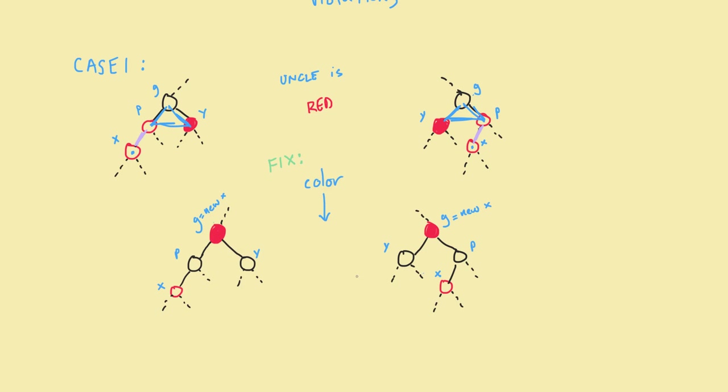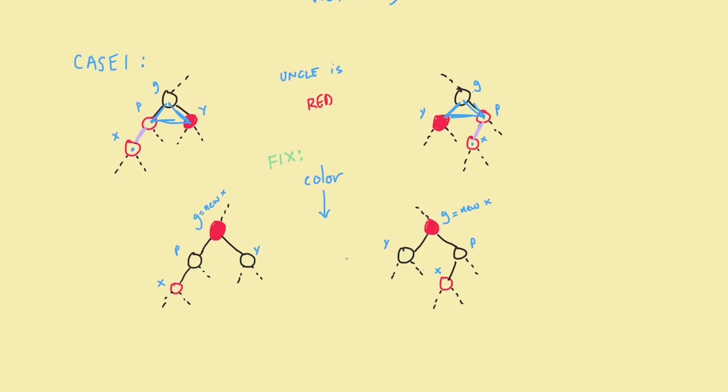But other than that, case one is finished. So remember that the uncle is red is a case one, and you just change the colors of all three of these nodes. That's an easy one.